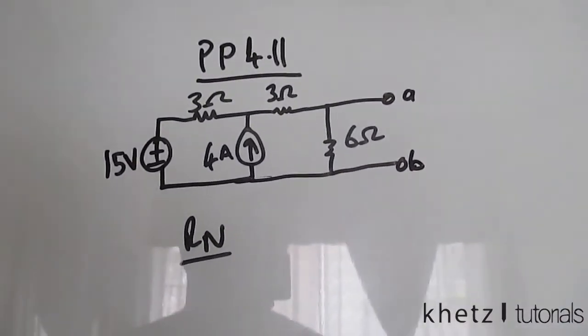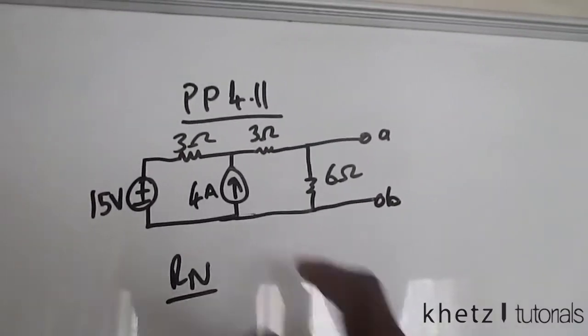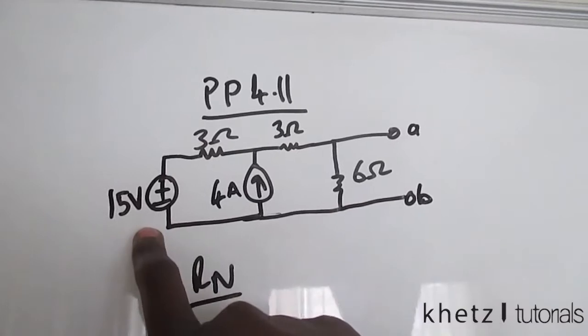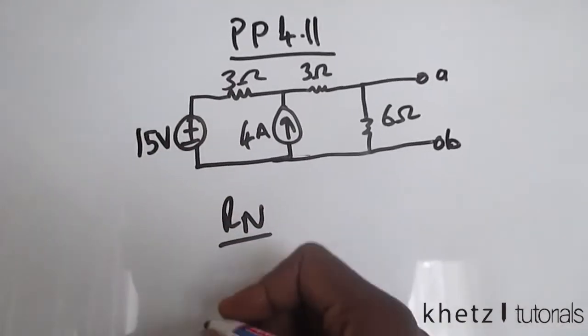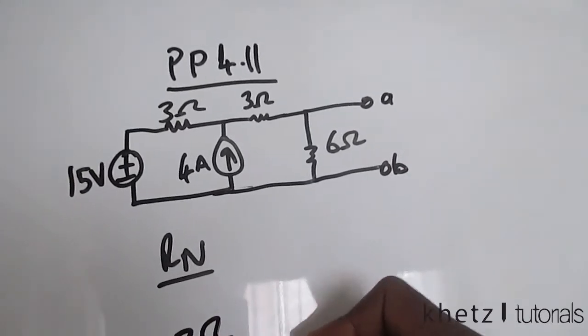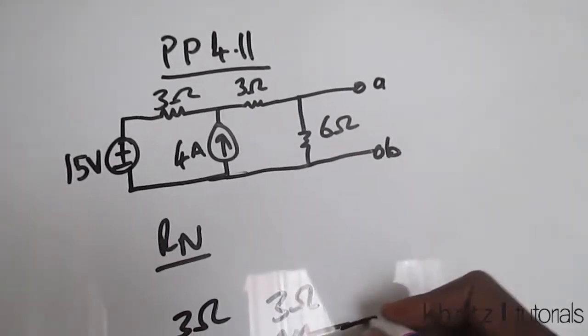What we do is turn off all the independent sources or take them out. Taking out the current source will lead to an open circuit, and taking out the voltage source will lead to a short circuit. So this is the new circuit that we have when finding the Norton equivalent resistance.